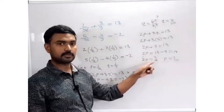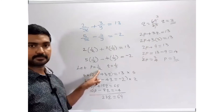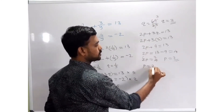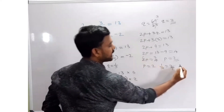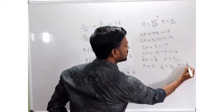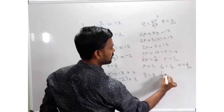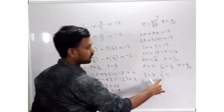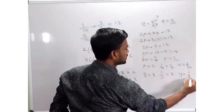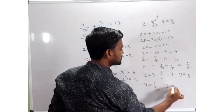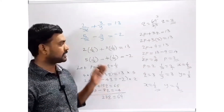So p = 2 and q = 3. Now, p = 1/x, so 1/x = 2. Taking reciprocal on both sides: x = 1/2. Similarly, q = 1/y, so 1/y = 3. Taking reciprocal: y = 1/3. Therefore, x = 1/2 and y = 1/3. This is the method of reducible to linear form.